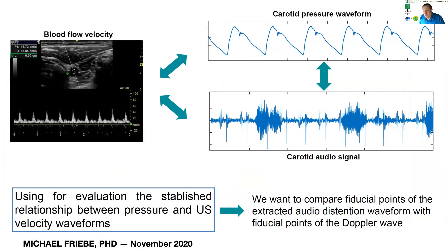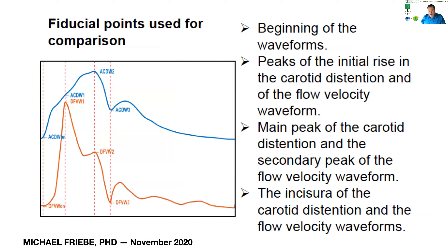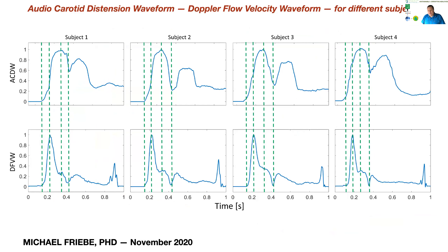One of the initial ideas was that we actually try to compare a carotid pressure waveform obtained by ultrasound with carotid audio signals and see whether we can establish a correlation between those two signals. For that, you need to actually have fiducial points to find starting and ending points. We used a rather complicated algorithm and setup to extract and segment these signals and put them over each other.